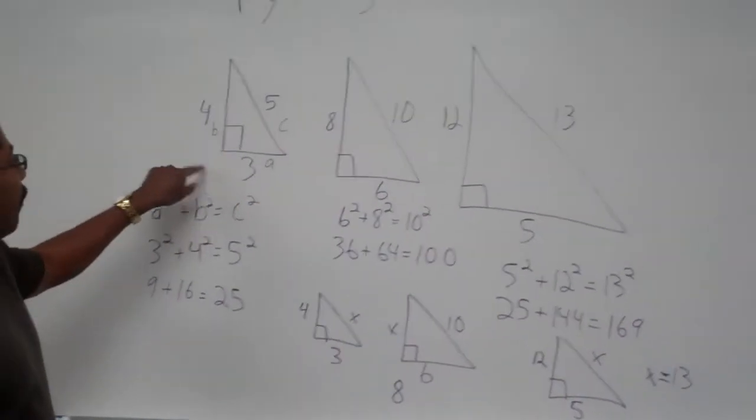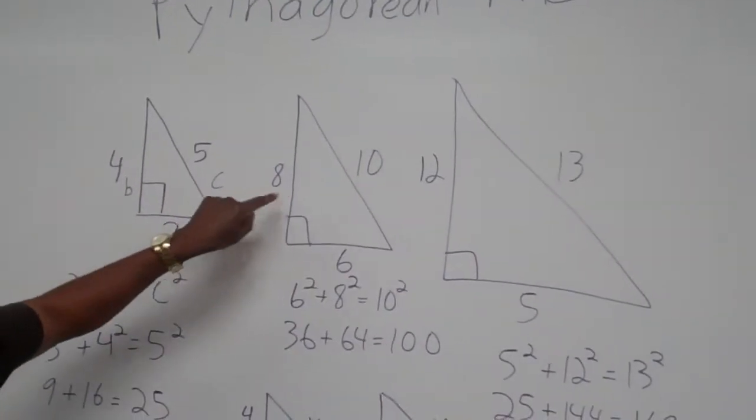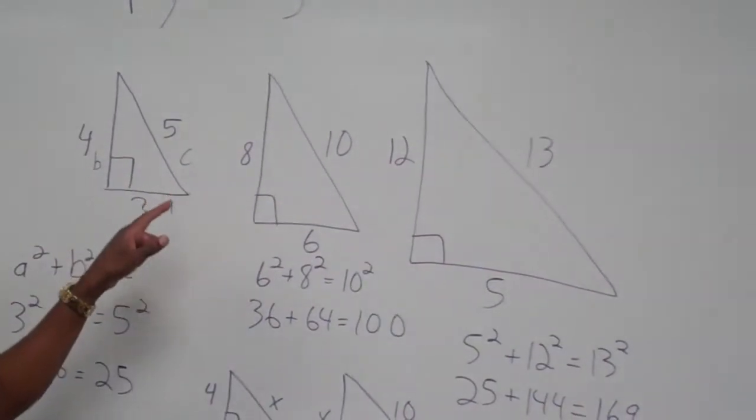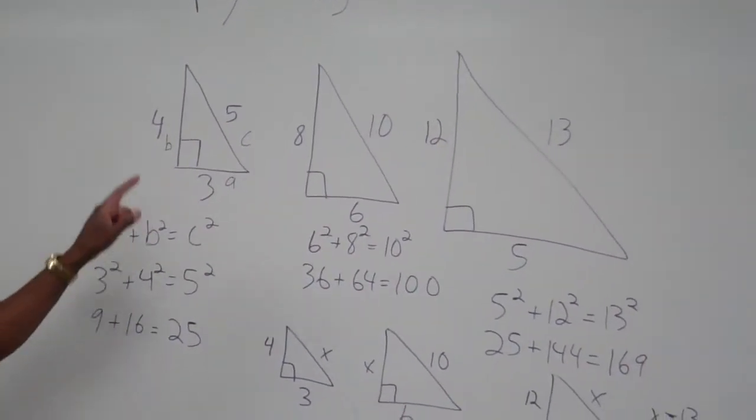Memorize these triangles: 3, 4, 5; 6, 8, 10; 5, 12, 13. And when you see this on a proficiency test, or any other test, those would be your answers.